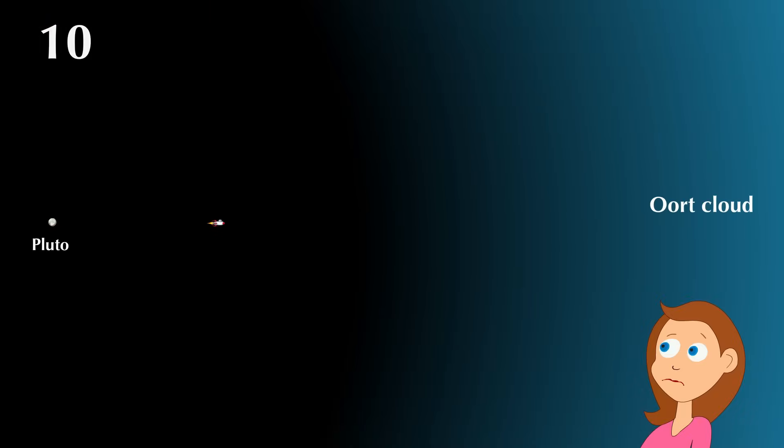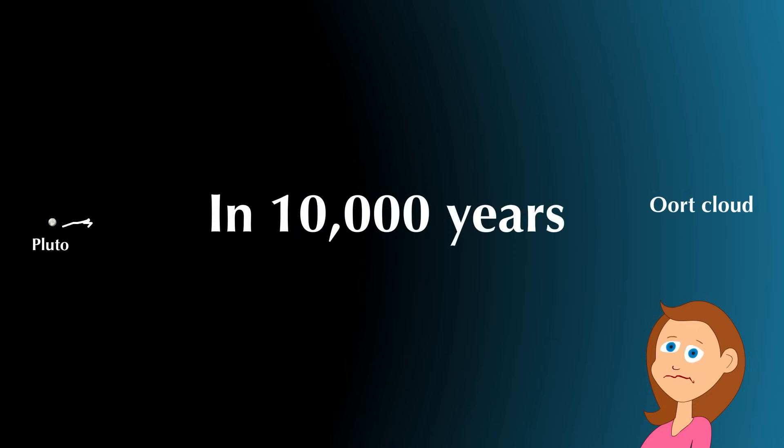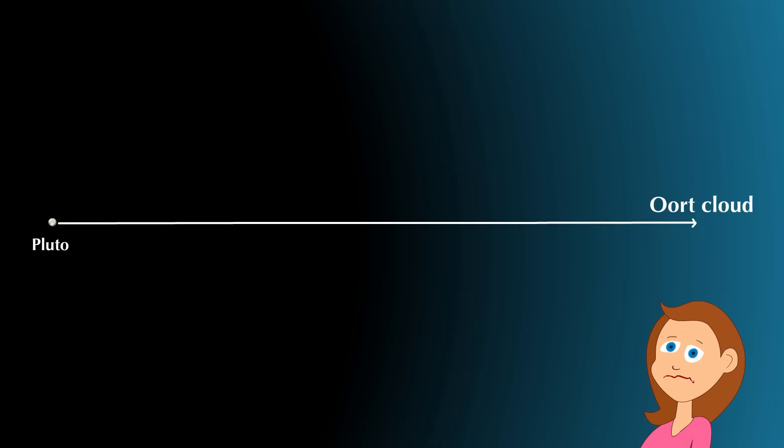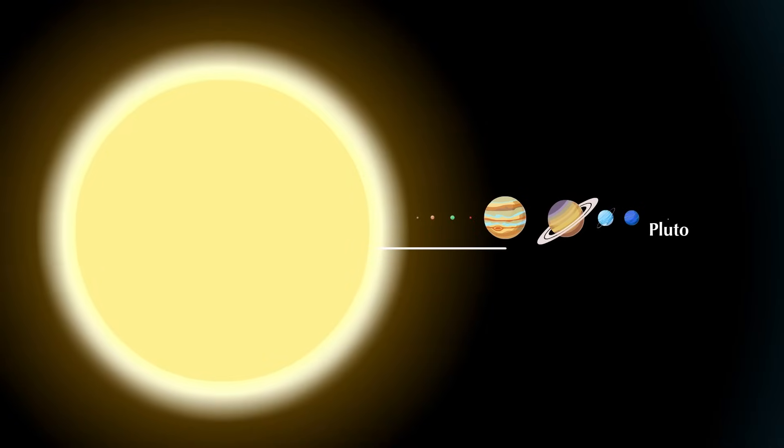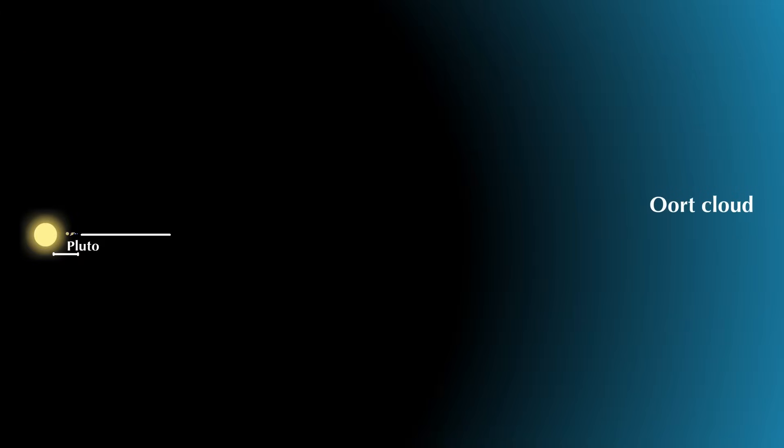If we continue traveling at the same speed beyond Pluto, we would reach the Oort Cloud, but I'm sorry to say this, in 10,000 years. Yes, the Oort Cloud is really far away. The distance from the sun to Pluto is just one-fifty-thousandth of the way out of the solar system.